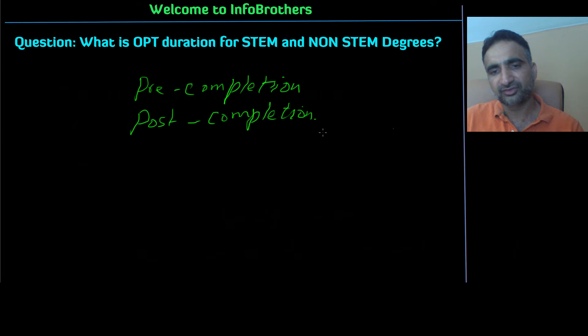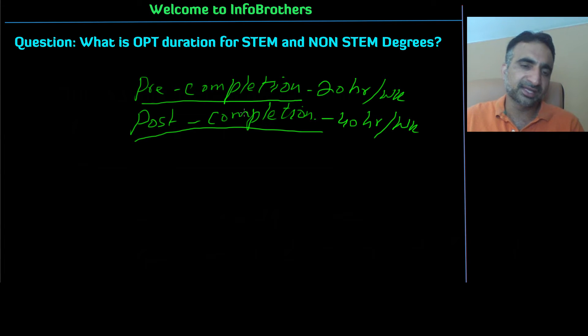And if you are done with the studies, you can apply for post-completion OPT. There are some limitations with the pre-completion OPT that you will be able to work for 20 hours per week. And with the post, you will be able to work for 40 hours per week.